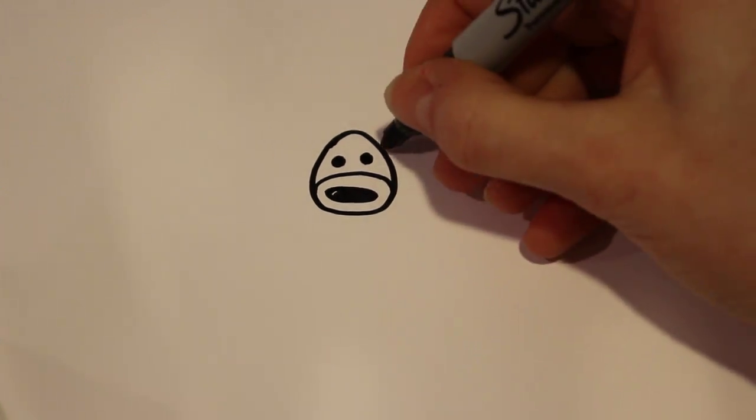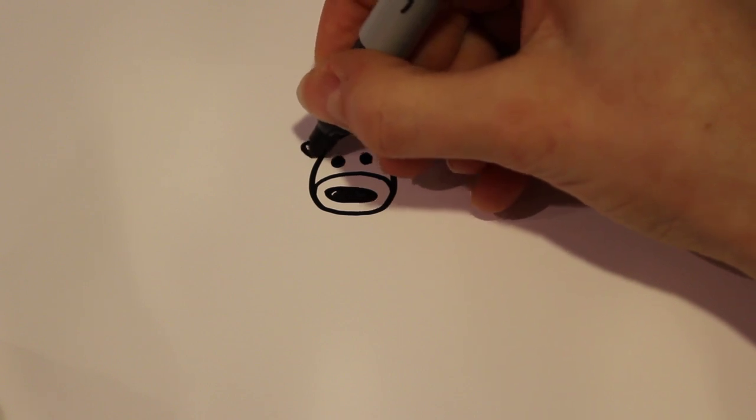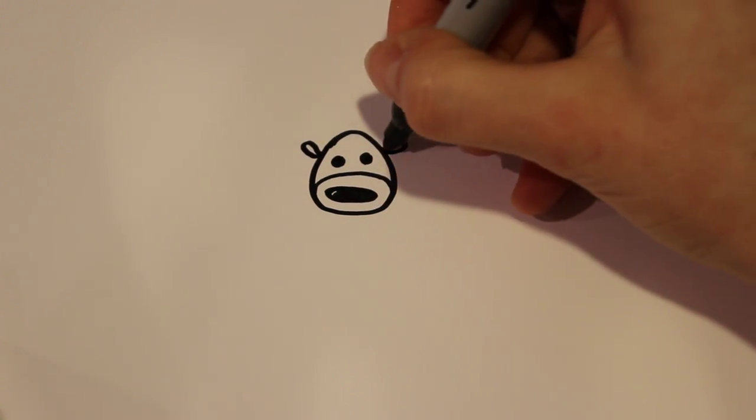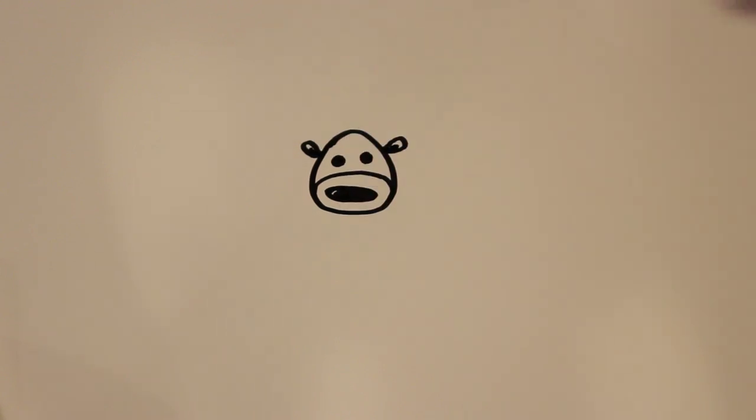For the ears, I'm going to draw two little floppy ears on the side there, not too detailed or anything. And then just a little inside ear detail, like that.